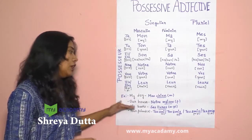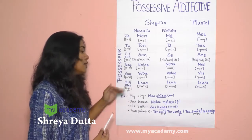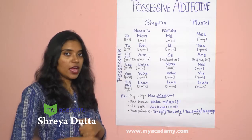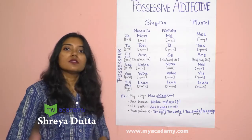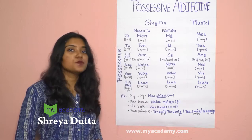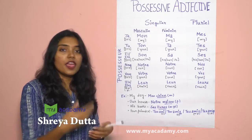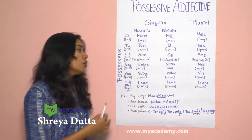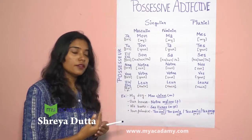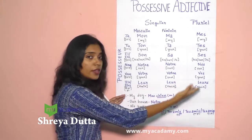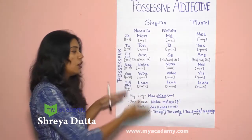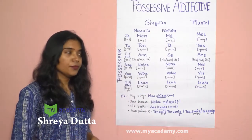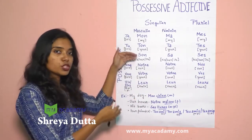The last one is ils or elles, meaning they. Whatever belongs to them becomes their — their property, their pet, anything. For masculine and feminine singular, we use leur. When it is plural, we use leurs — that is, leur with an S. For both masculine and feminine cases, the rule is the same.